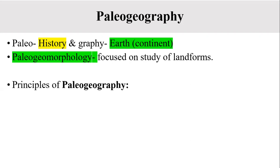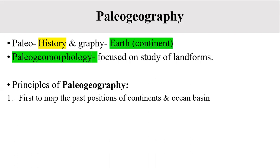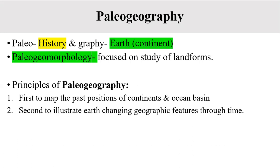There are two important principles of paleogeography. The first principle is to map the past position of continents and ocean basins. The second principle is to illustrate the Earth's changing geographic features through time.